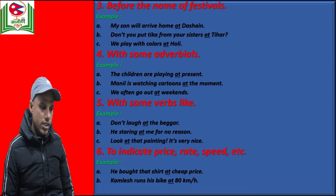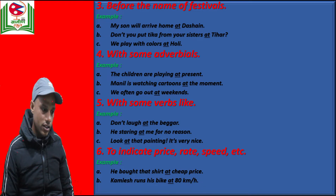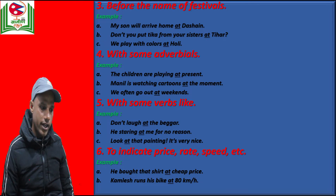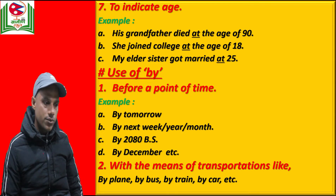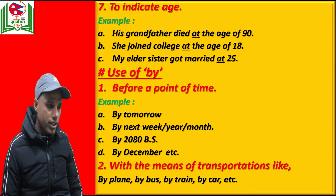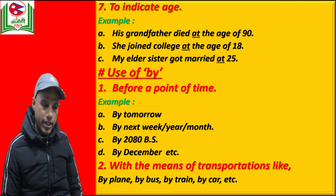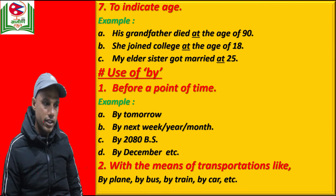The next condition is to indicate price, rate, or speed — we use preposition 'at'. For example: he bought that shirt at a cheap price. He runs his bike at 80 mph. To indicate age, we also use preposition 'at'. For example: his grandfather died at the age of 90. She joined college at the age of 18. My elder sister got married at 25. This is all about the use of preposition 'at'.